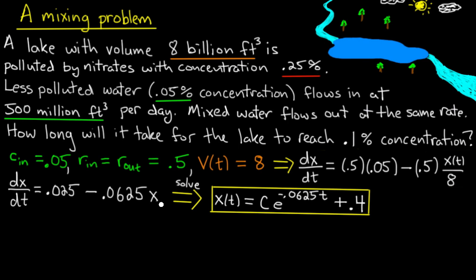And I can solve this equation either by the method of separating variables or by the method of integrating factors. Your choice. So I solve it, and I'll get x equals C e^(-0.0625t) plus 0.4. This is a general solution to this problem. Now I want a particular solution. I want to satisfy an initial value.